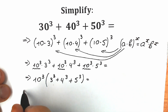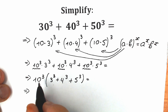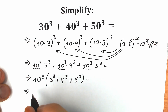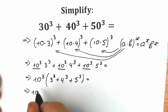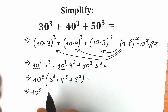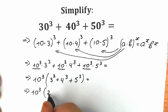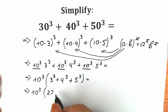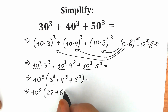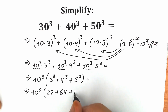The final step: because 10 cubed equals 1000, but let's finish simplifying first. We have 10 cubed, and in the parenthesis we can add all these expressions: 3 cubed is 27, 4 cubed is 64, and plus 125 — that's our 5 cubed.